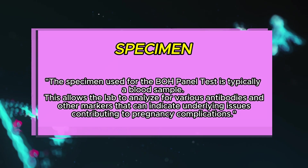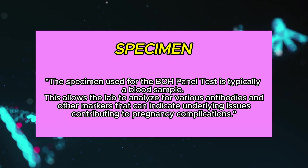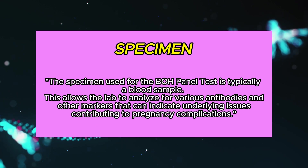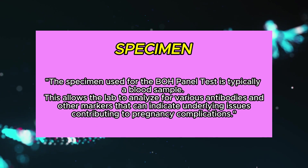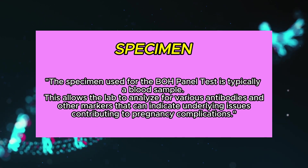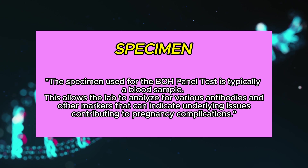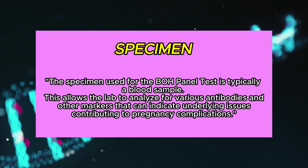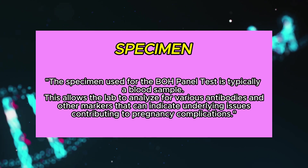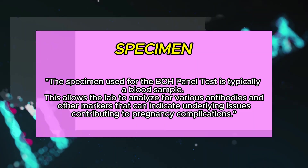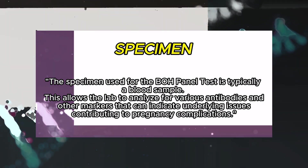Specimen used. The specimen used for the BOH panel test is typically a blood sample. This allows the lab to analyze for various antibodies and other markers that can indicate underlying issues contributing to pregnancy complications.